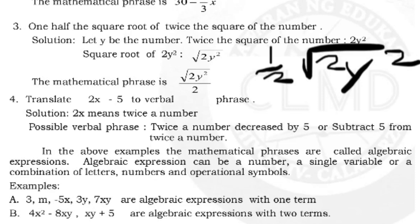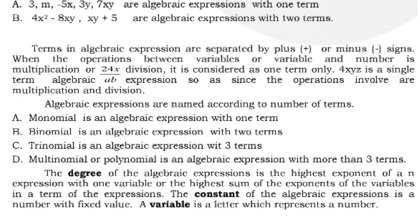Examples of algebraic expressions with one term include: 3, m, −5x, 3y, and 7xy. Expressions with two terms include: 4x² − 8xy, and xy + 5. Terms in an algebraic expression are separated by plus or minus signs. When the operation between variables or between a variable and a number is multiplication or division, it is considered as one term only.